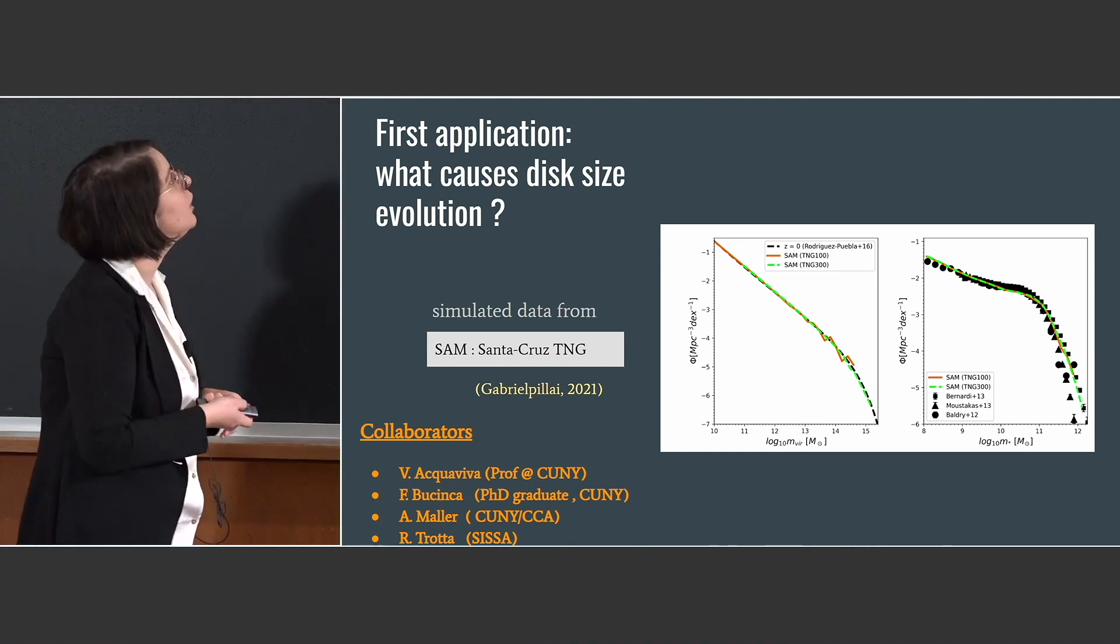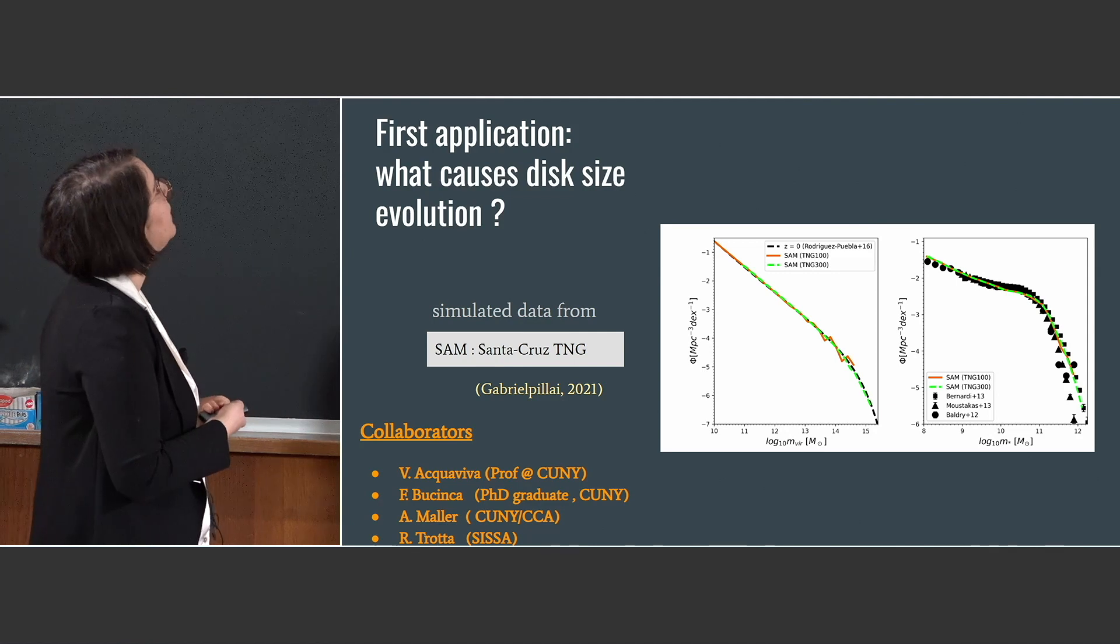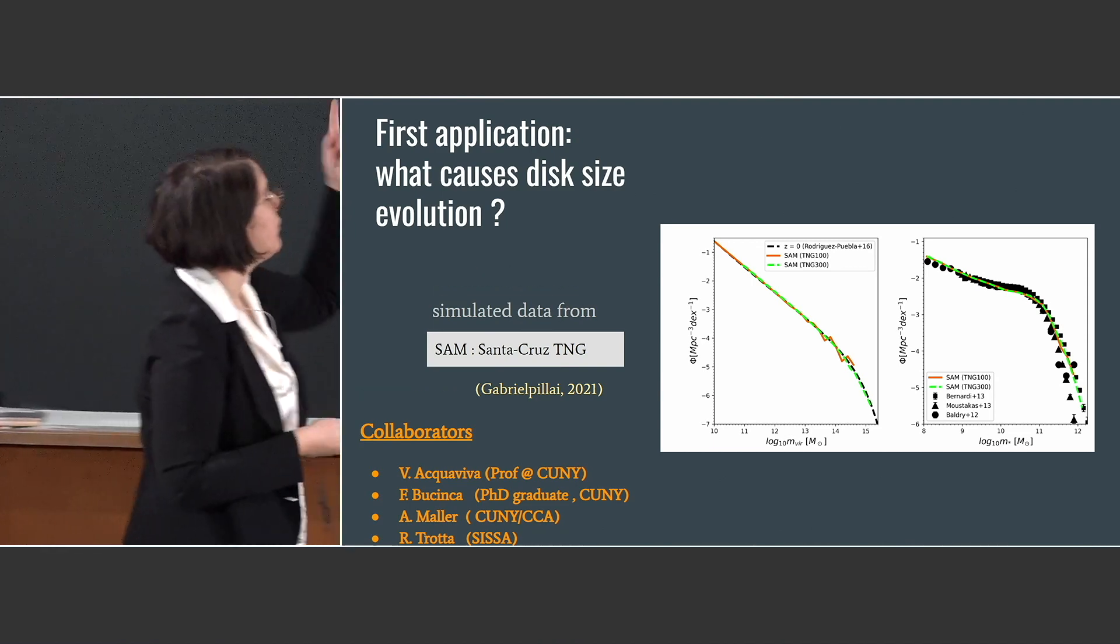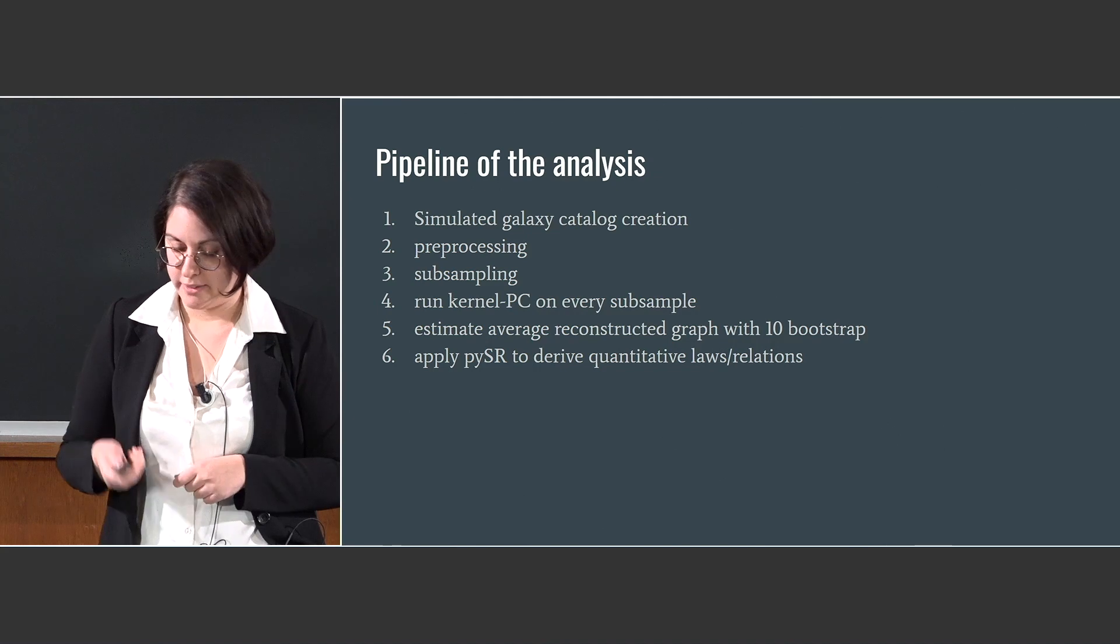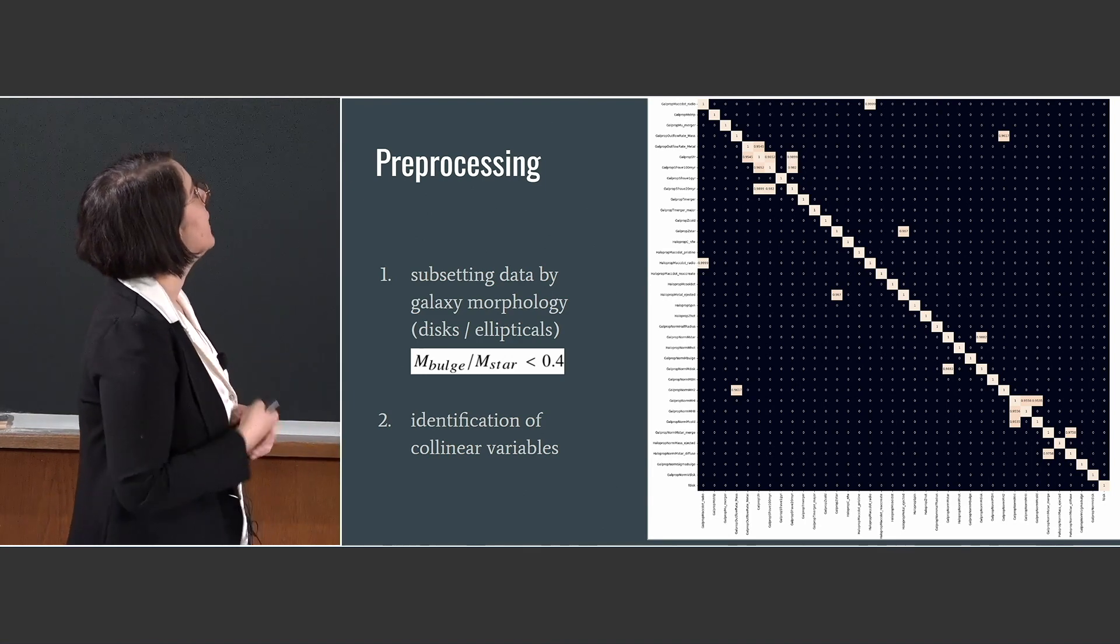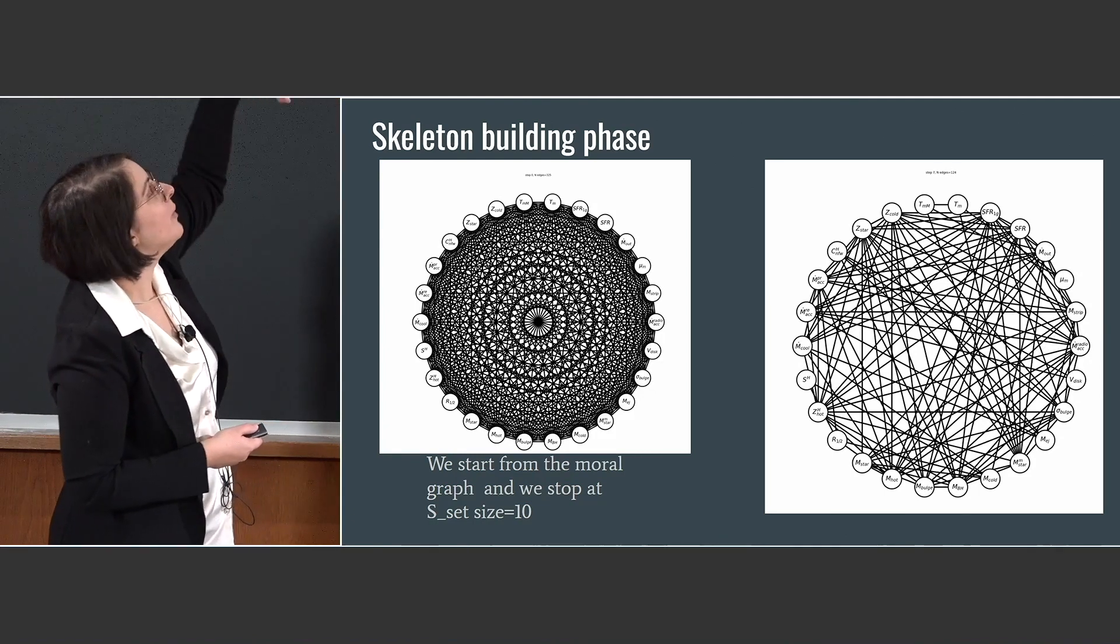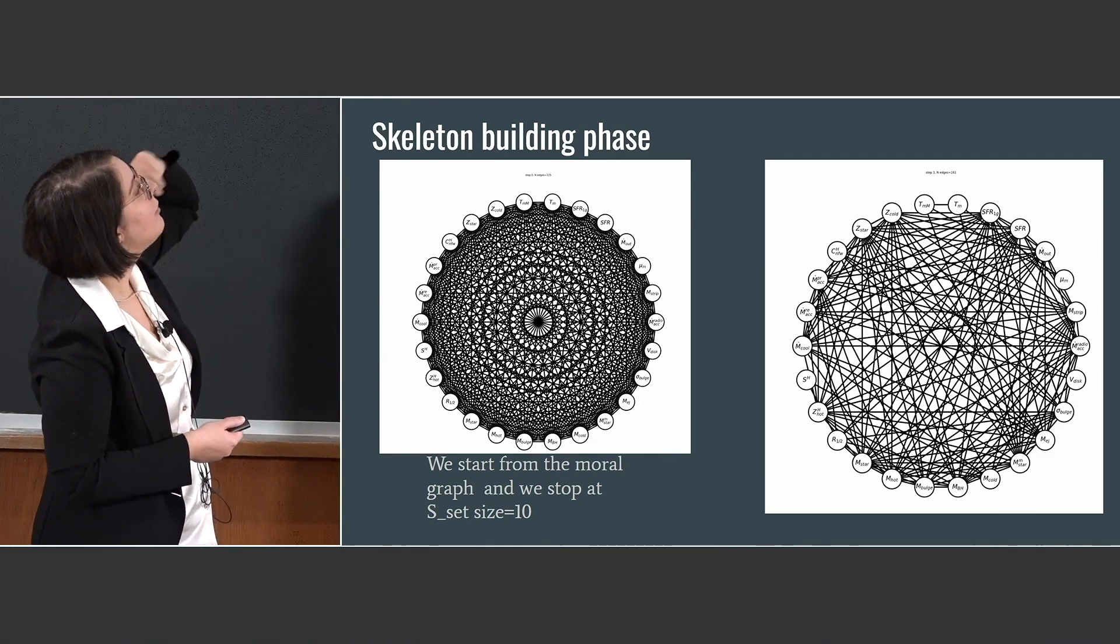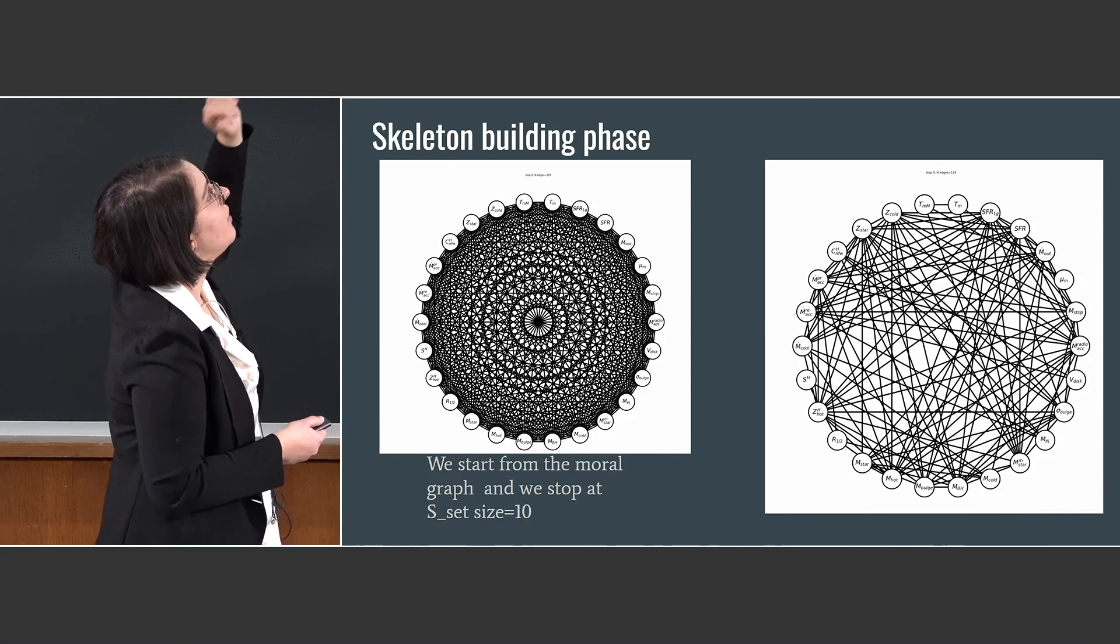And then I went to the first application of these algorithms where we studied the drivers of galaxy disk size. We use the data extracted from the semi-analytic model Santa Cruz TNG, in particular the one based on TNG 300. Here there is the reference article Gabriel Pillai 2021. And what we found after selecting only galaxies with the bulge over stellar mass ratio less than 0.4, we started from this moral graph where all the variables in the data set are connected. We have selected 26 not collinear variables and we started from the moral graph where all the variables are connected.